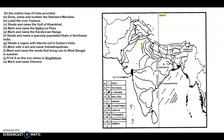Then Nathu La Pass — it is here. Then we have the Karakoram Range — Karakoram Range is here. Then shade and name a sparsely populated state in northeast India — here we have shaded Arunachal Pradesh.